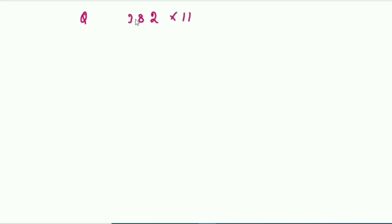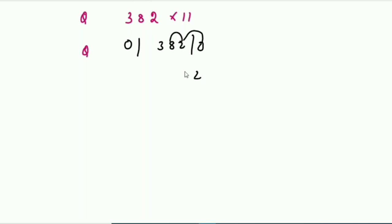Now 382 multiplied by 11. Place zeros on each side. Two plus zero is two. Next, eight plus two is ten — you cannot write ten, so one is carry forward. Zero and carry one: eight plus three is eleven, plus one carry is twelve. Next, three plus zero is three, plus one carry is four. Your answer is 4202.